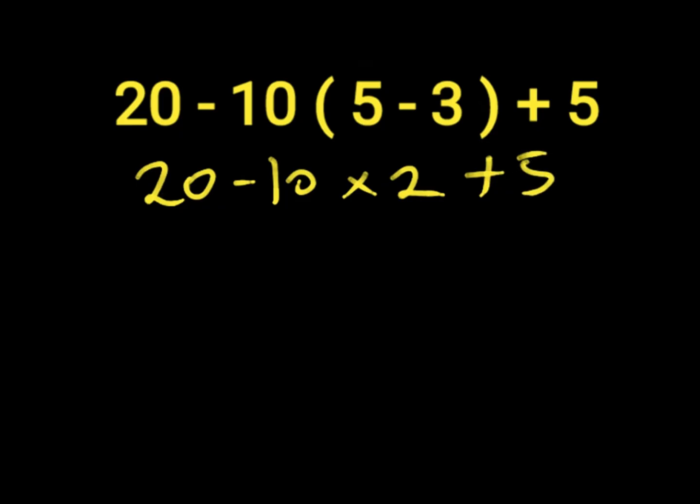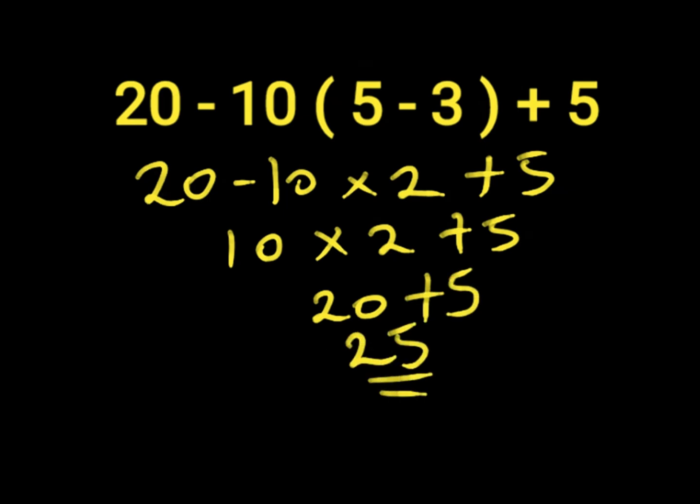So 20 minus 10 will give us 10. Then 10 times 2 plus 5. 10 times 2 will give us 20. Then we have 20 plus 5. 20 plus 5 will give us 25. So 25 is the wrong answer to this expression because we do not work with the order of operations, which is PEMDAS.